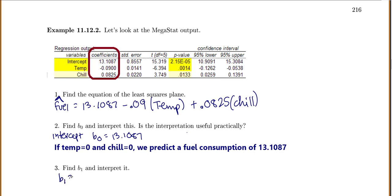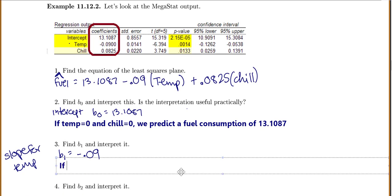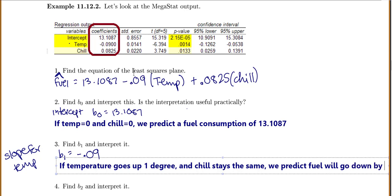Let's find b1 and interpret it. So this will be our slope for, okay, my first variable is temperature. So it will be my slope for temperature. b1 is equal to this negative 0.09. So we'll say this is if our temperature, or our variable we're interested in, so temperature goes up one degree. And here's the important part, and chill stays the same. We predict y, or our fuel, will go, now I was going to say up, but that's a negative, so we'll go down by 0.09 units.